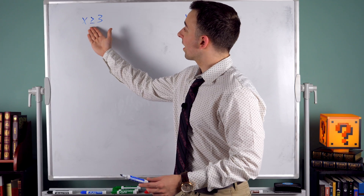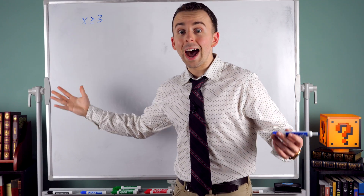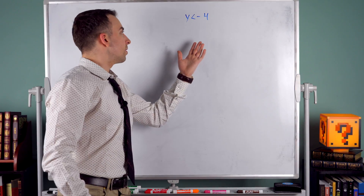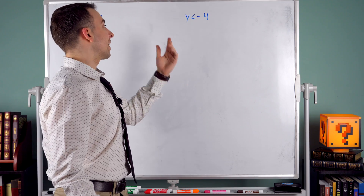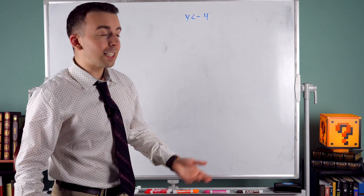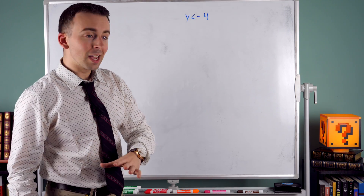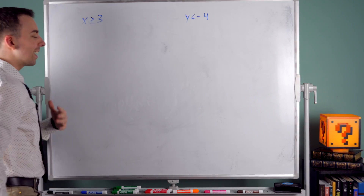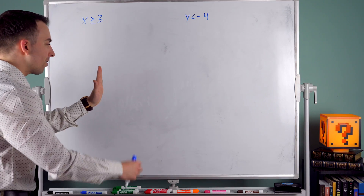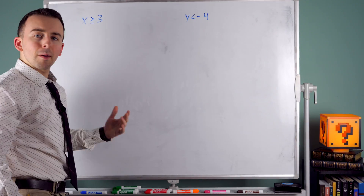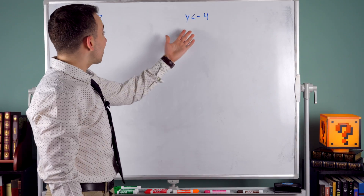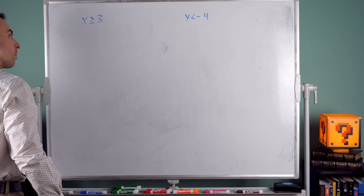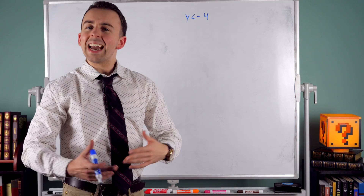For x ≥ 3, this includes numbers like 3, 4, pi (which is about 3.14) — any number that's at least 3. For y < -4, this includes numbers like negative 4.1, negative 7, negative a million — any number that's less than negative 4. With x being at least 3, that starts at 3 and includes all the greater numbers up to positive infinity. This starts at negative 4, but doesn't include negative 4, and includes all numbers less than that, all the way down to negative infinity.